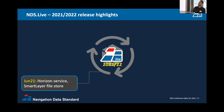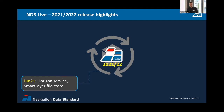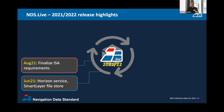The release highlights: in June, right after the last NDS conference, we added the Horizon service and also smartly a file store for fallback use cases, because before that it was always services only. Now we also have a file store fallback you can install in the vehicle and simply transfer files. In August, we finalized ISO requirements and missing rule regulations. That was a big thing back then.